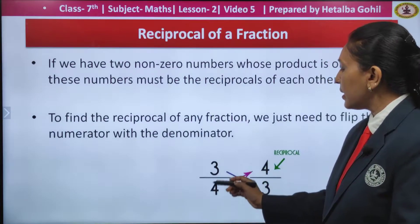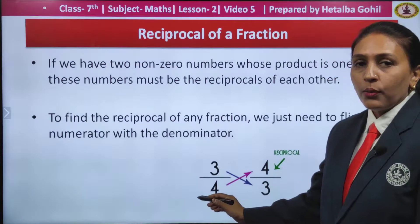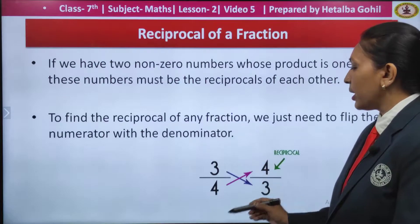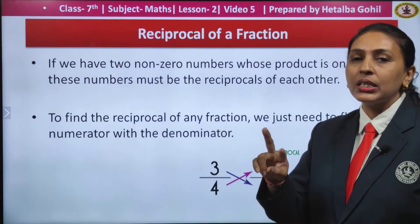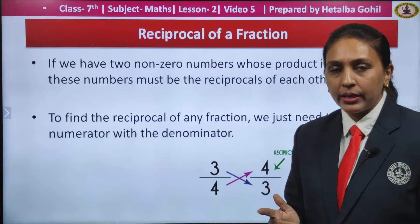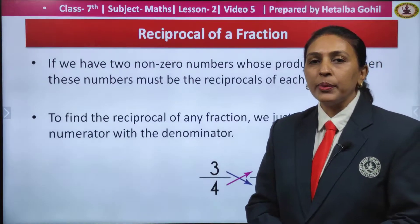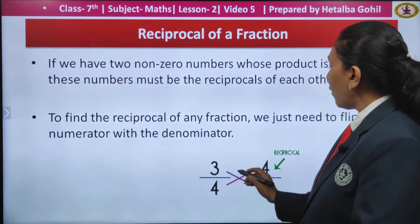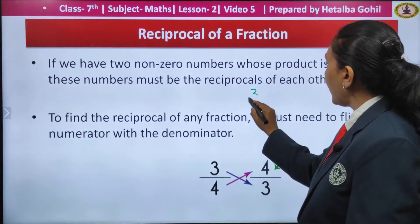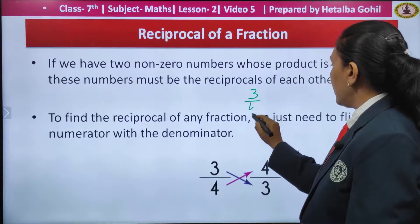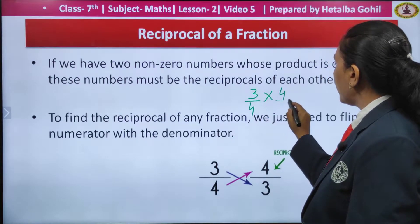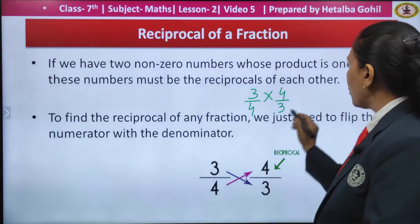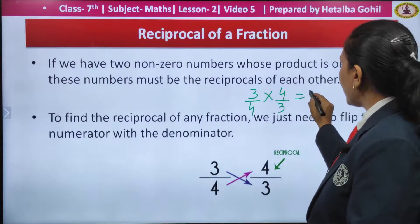For example, you can see children here: 3 upon 4. What is the reciprocal of 3 upon 4? It is 4 upon 3. Just invert the number — the numerator becomes denominator and the denominator will become numerator. And when you multiply the reciprocal of a number with the original number, you get your product always as 1.